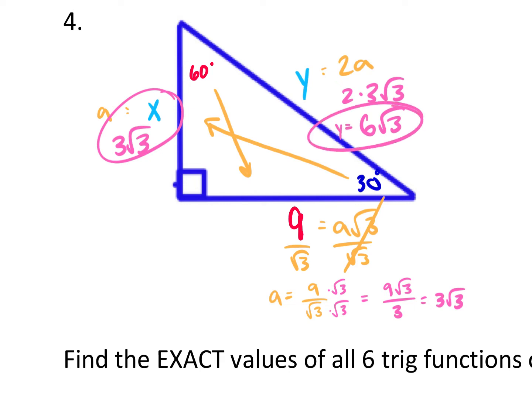This question asked for the six trig functions, but it's more important to find the two missing sides first. In a 30-60-90 or 45-45-90 triangle, it'll only give you one side and you can't use the Pythagorean theorem with just one side — you have to know your special right triangles.